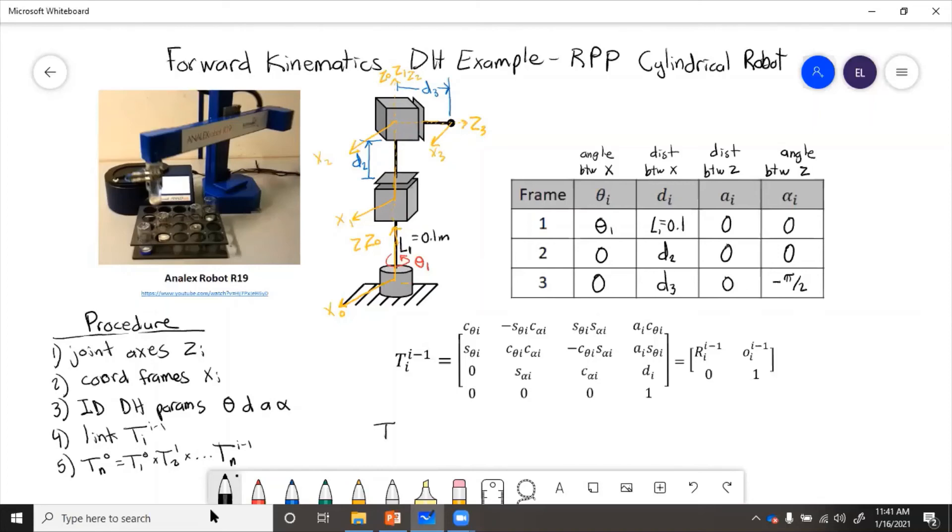And we multiply them all together to get from base to tip. So transformation from the tip, which is 3 in frame 0, is going to be t1 and 0, using the first parameters, times t21, using frame 2 parameters, times t32, using 3 parameters. So that's just matrix multiplication, and you would get this final result. Then if you were given values that each of the joints had gone, theta 1, d2, d3, you could find an exact position. Or you can just leave it as a function of these parameters, which will be valid for any robot configuration that is this same exact robot.